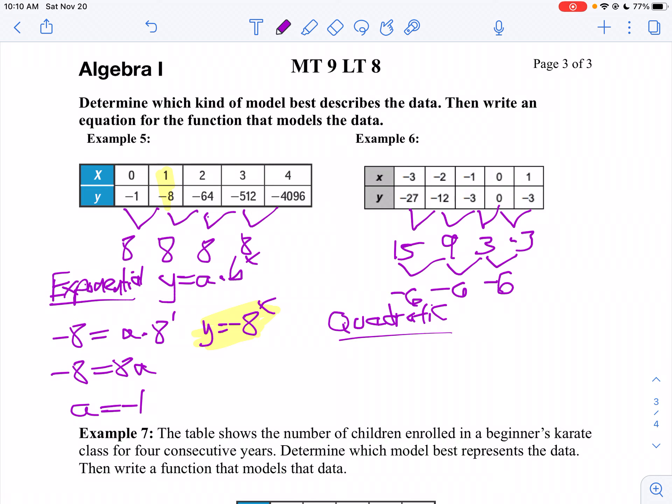Which means I'm going to be in the form of y equals ax squared. And once again, don't use (0,0) because weird things happen with (0,0). Let's use 1 and negative 3. So we're going to say negative 3 equals a times 1 squared. Well, that means negative 3 equals a, doesn't it? So y equals negative 3x squared.